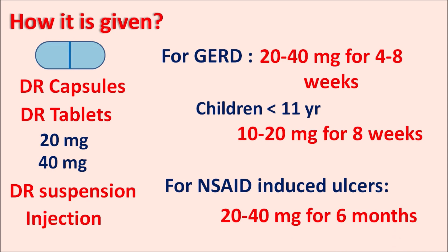S-omeprazole is an S-isomer of omeprazole and a proton pump inhibitor. This drug is selectively accumulated within the acidic canaliculi and, being a prodrug, is converted into the sulfenamide active metabolite in the acidic environment. Within the acidic environment it accumulates and blocks the activity of the proton pump, thereby controlling gastric acid secretion. Clostridium difficile associated diarrhea, bone fractures, and hypomagnesemia are important precautions to consider when this drug is prescribed for long-term treatment.